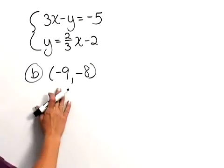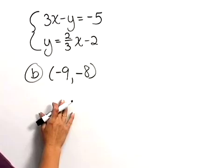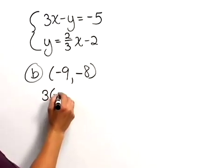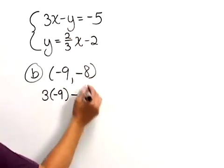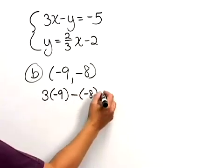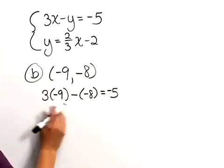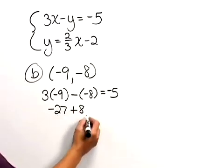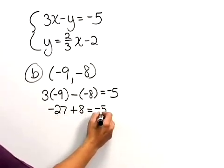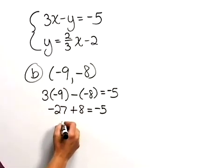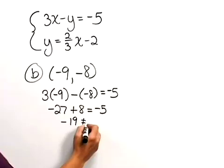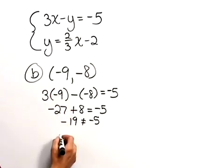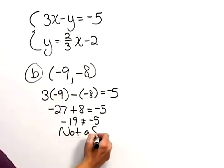For part b let's check negative 9, negative 8. We will use our first equation. Replacing the x with negative 9 and the y with negative 8, we get 3 times negative 9 minus negative 8 equaling negative 5. That gives us negative 27 plus 8, which equals negative 19, not equal to negative 5. We don't even have to check the second equation because if it doesn't work in one, it is not a solution.